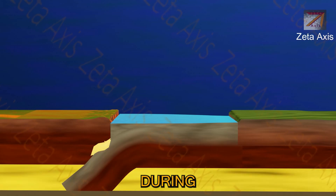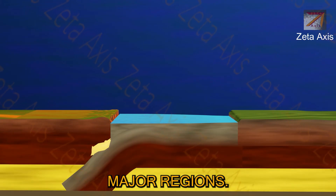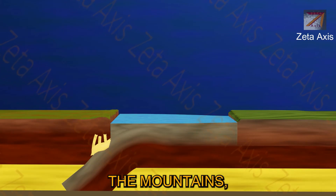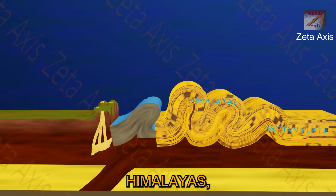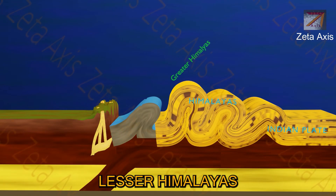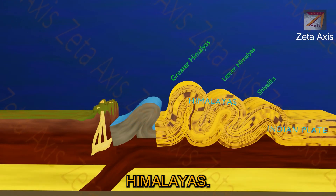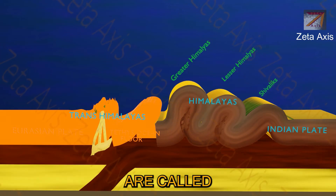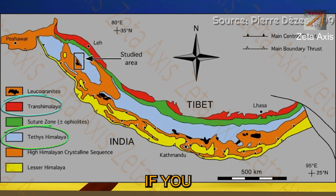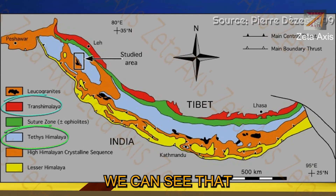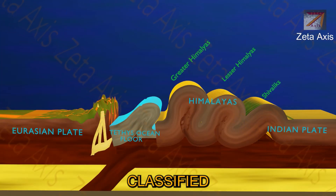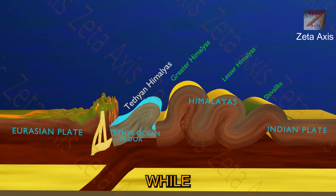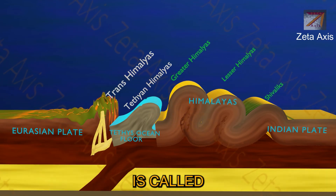The Himalayan mountain system is further divided based on the origin of its mountain ranges. During the collision there were three major regions: the Eurasian plate, the Tethys ocean floor, and the Indian plate. Mountains uplifted from the Indian plate are called Himalayas, which include the Greater Himalayas, Lesser Himalayas, and Siwaliks or outer Himalayas. Mountains uplifted from the Eurasian plate and the Tethys sea floor are called Trans-Himalayas in our NCERTs, but major works further classify them into Tethian or Tibetan mountain ranges from the Tethys ocean floor, and Trans-Himalayas from the Eurasian plate.